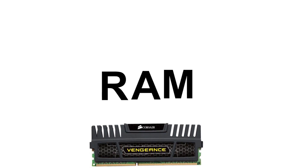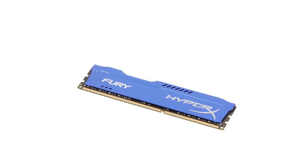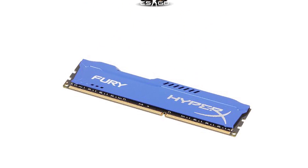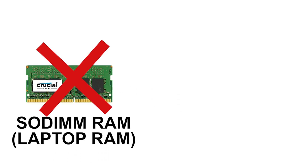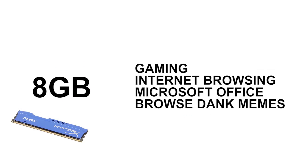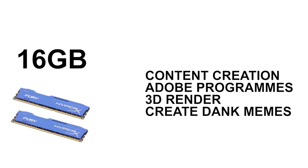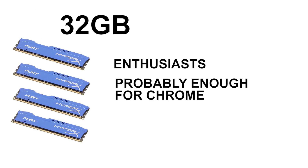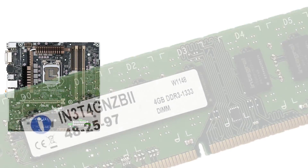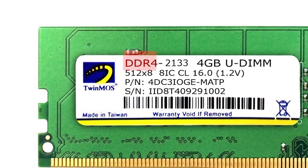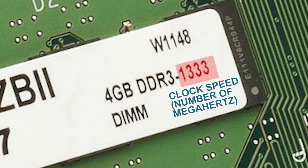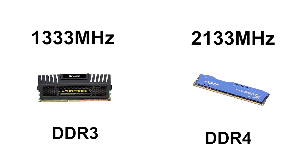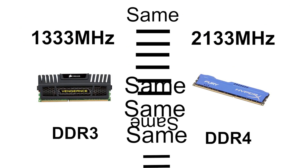RAM is like your short-term memory — it's faster than an SSD. Your computer stores information it currently needs and automatically deletes it when you close the program. Do not buy ECC memory. 8 gigs is good for gaming and general use; 16 for content creation; 32 or more for enthusiasts. Check your motherboard for whether it supports older DDR3 or current DDR4 RAM. Two sticks are better than one at the same capacity. The number of megahertz, the brand, and the version of the RAM do not make much difference.